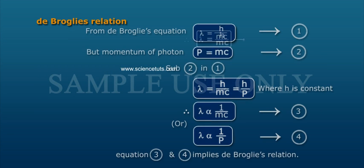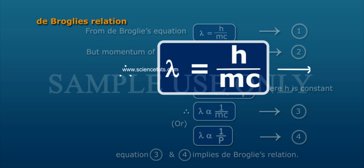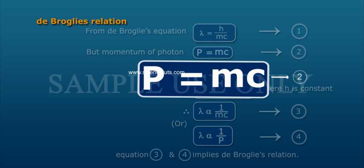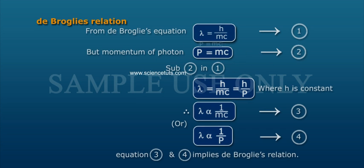From de Broglie's Equation, Lambda is equal to H by MC, Equation 1. But momentum of a photon P is equal to MC, Equation 2. Substitute Equation 2 in Equation 1: Lambda is equal to H by MC is equal to H by P.